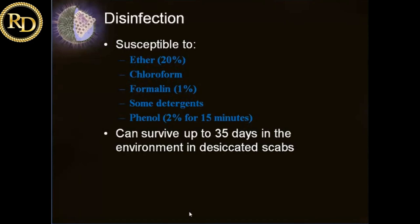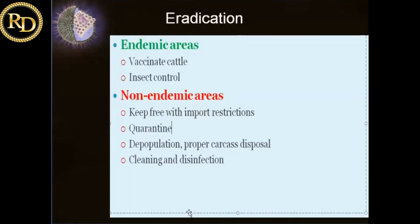Surrounding troughs, feed managers, and water troughs should all be disinfected. The floor should be washed so that shed virus doesn't affect other animals. For eradication in endemic areas, the two main measures are vaccinating the cattle and controlling the insects. In non-endemic areas, animals should not be imported from endemic areas. Imported animals should be quarantined, with proper carcass disposal, cleaning and disinfection — these are general eradication measures.